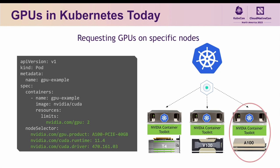If you need access to a specific type of GPU, a combination of node labels and node selectors can help direct the scheduler to a node containing the specific type of GPU you are looking for — in this case, an A100 with 40 gigabytes of GPU memory.